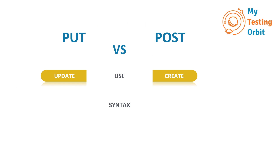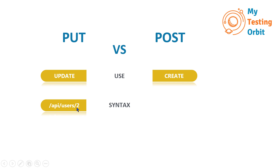The second difference is in the syntax. In a PUT request, there is an identifier in the URL indicating we are updating a resource identified by that value — and this identifier is chosen by the client. In a POST request, we don't use an identifier; it indicates we are creating a new resource, and the server returns an identifier to describe the newly created resource.